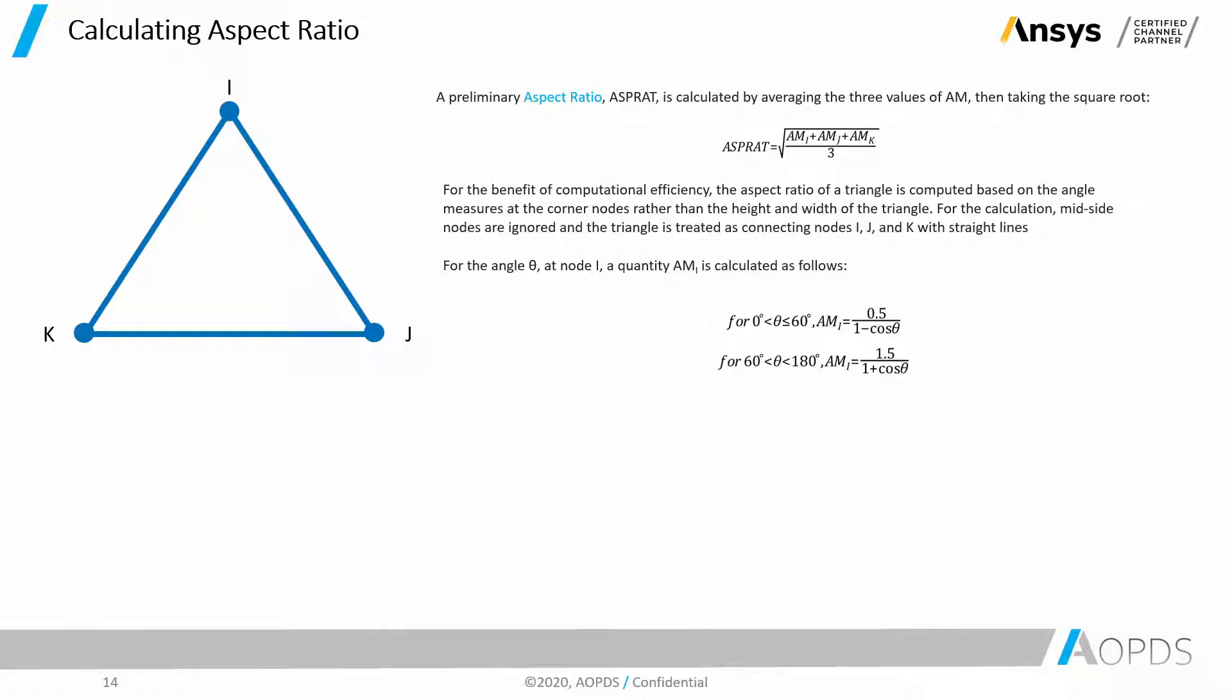The quantity AMI is 1 when theta is 60 degrees. As theta deviates from 60 in either direction, AMI increases to a maximum of infinity as theta nears 0 or 180 degrees.